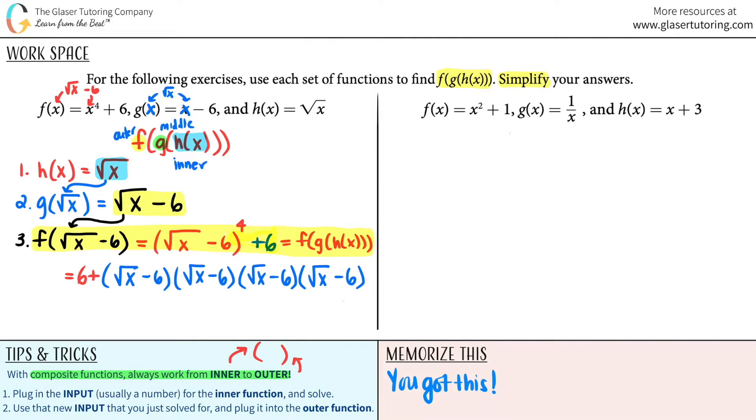So same thing. f of g of h of x. Inner to outer. Same exact thing. We're doing the innermost h function first. Then comes the g and then comes the f function. So for number one, h of x is, well here it was, it's just x plus 3. Can't simplify that. So I'm just going to box this off.